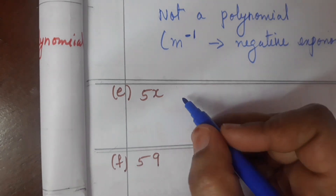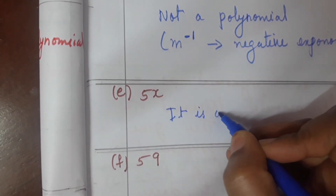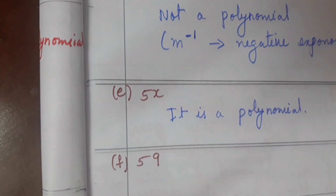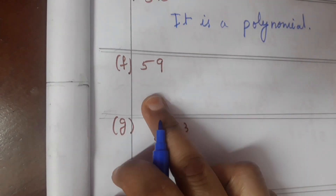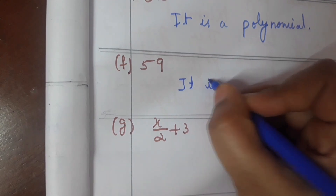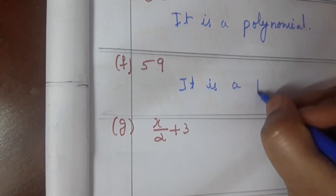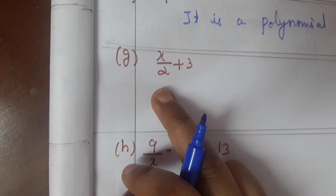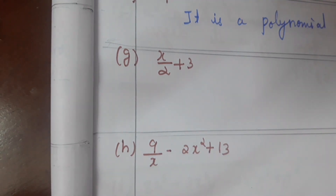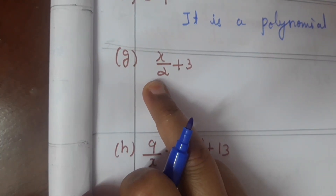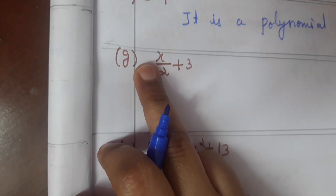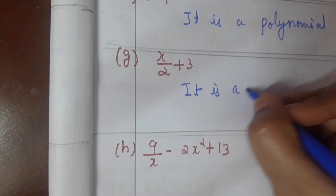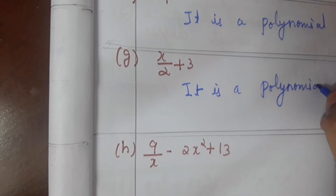5x is a polynomial. 59 is just a number — a monomial — and we can say it is a polynomial. x by 2 plus 3: x is in the numerator; the denominator should not have variables. Here x is written in the numerator, so it is a polynomial.